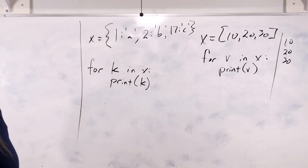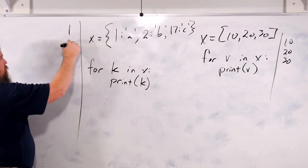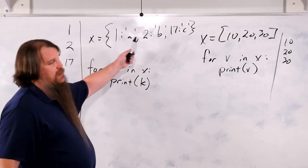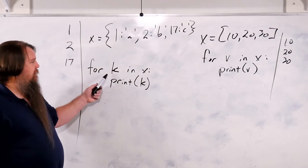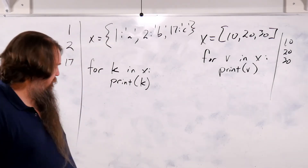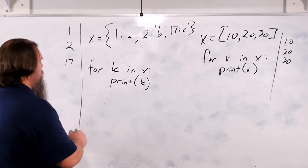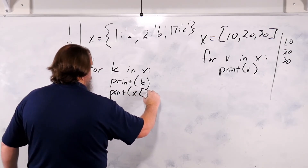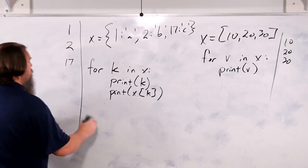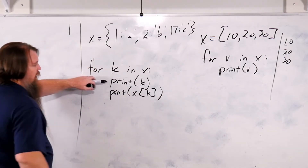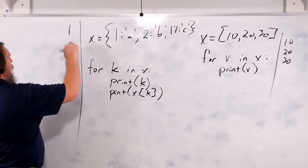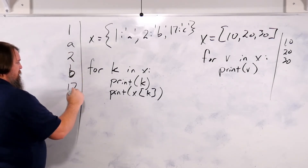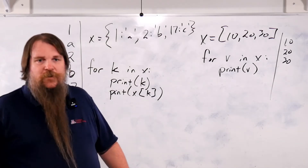It will print 1, 2, 17. When you do a for loop over a dictionary, what you get is the keys of the dictionary. Well, what if you want the values as well? `print(x[k])` — and now it will print 1, then a, then 2, then b, then 17, then c.